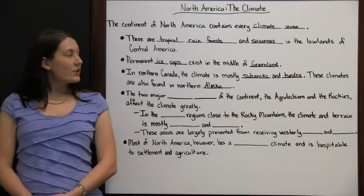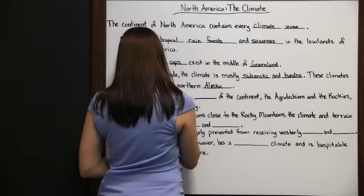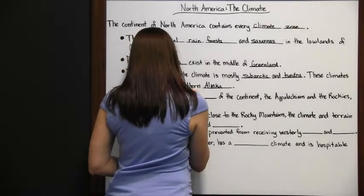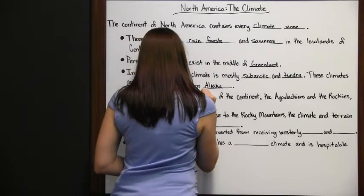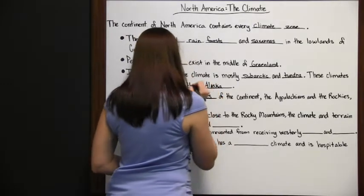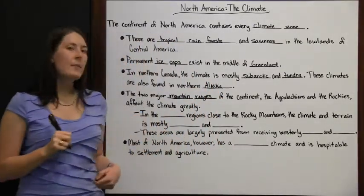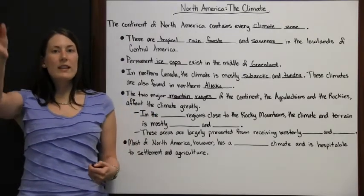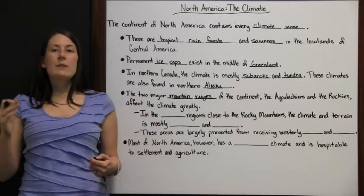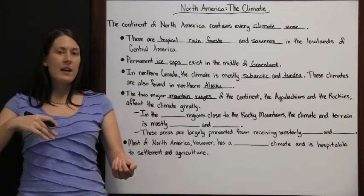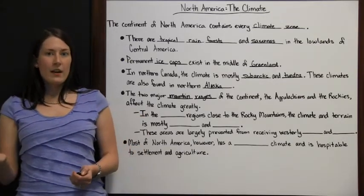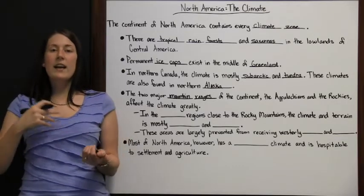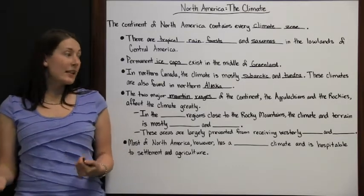The two major mountain ranges of the continent, the Appalachians and the Rockies, affect the climate greatly. These mountain ranges are really high up and they split one side of the continent from the other, keeping certain things on one side and preventing them from getting to the other.